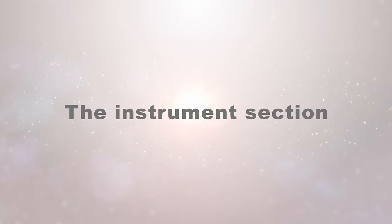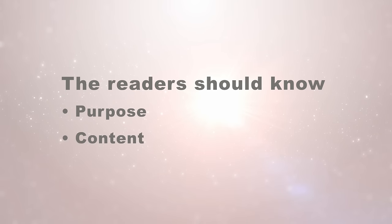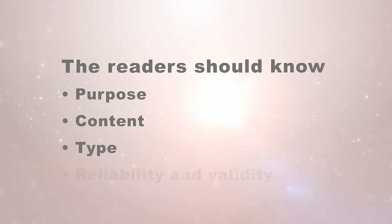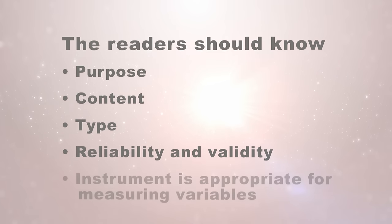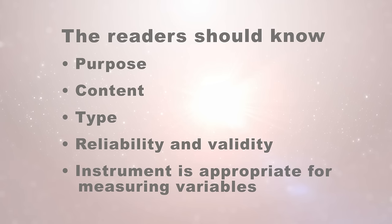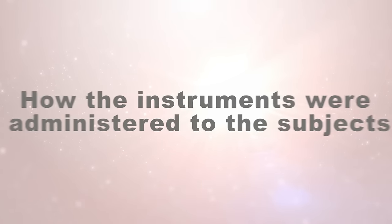The next step in the review of the research article is to look at the instrument section of the paper. Are the instruments described adequately? The author should tell the reader the purpose of the instrument, the content, and the type of instrument. Information should be provided about the reliability and validity of the instrument. As a reviewer, you must assure that the instruments are appropriate to measure the variables in the research questions. The author also needs to clearly describe how the instrument was administered — was it a survey, was it an interview, and exactly what procedures were done?